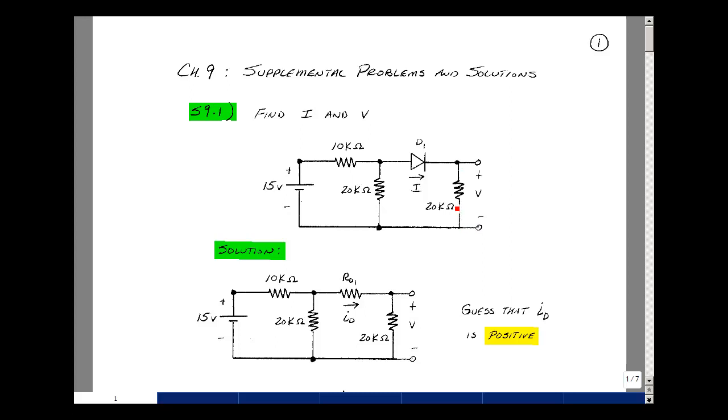Our strategy for solving this kind of problem was to replace the diode by a resistor and try to figure out whether the current is flowing from anode to cathode or from cathode to anode. Let's figure that out.